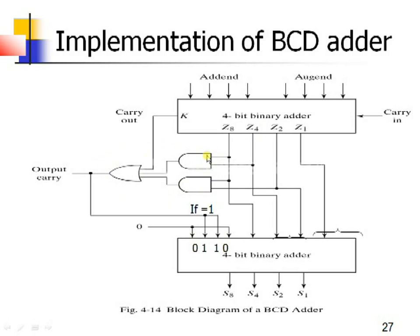There are two AND gates. One AND gate has inputs Z8 and Z4, and the other AND gate has inputs Z8 and Z2. The outputs of these two AND gates are given as inputs along with the carry K to an OR gate, and the output of the OR gate is connected as one operand to the 4-bit binary adder. This is how we represent the BCD adder circuit.